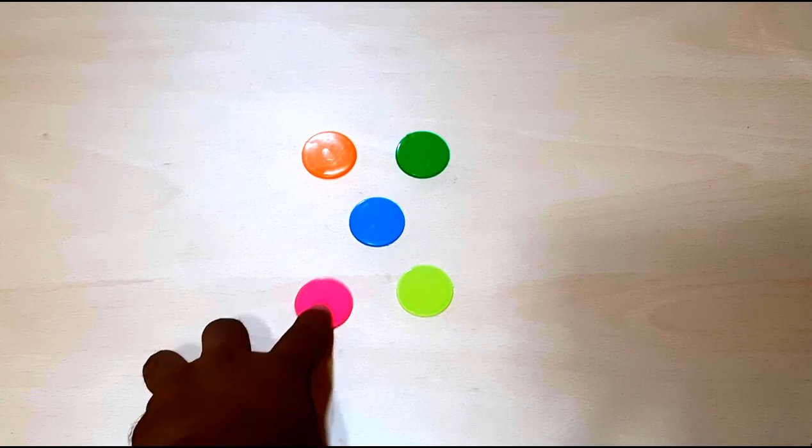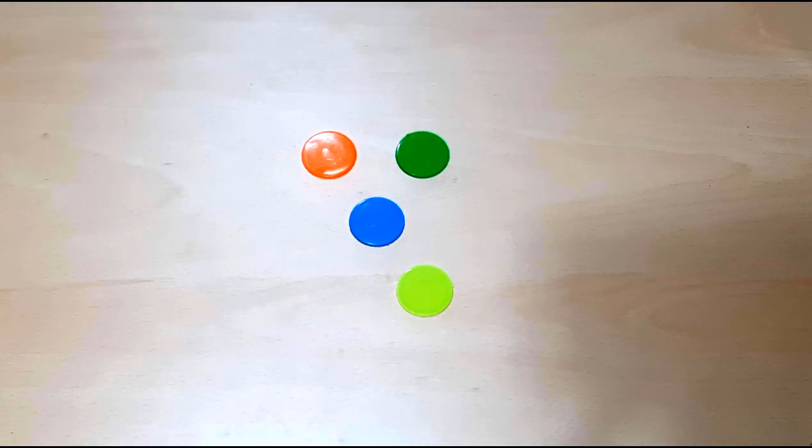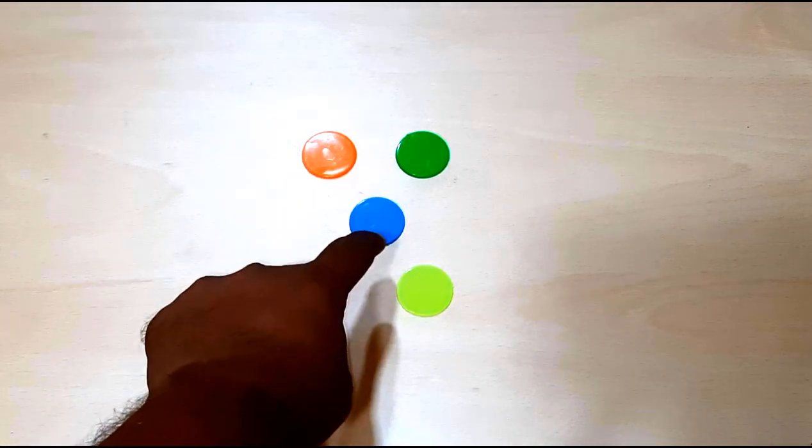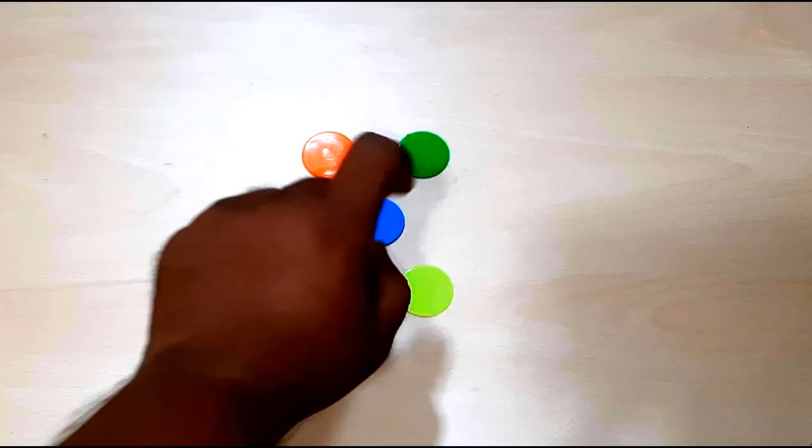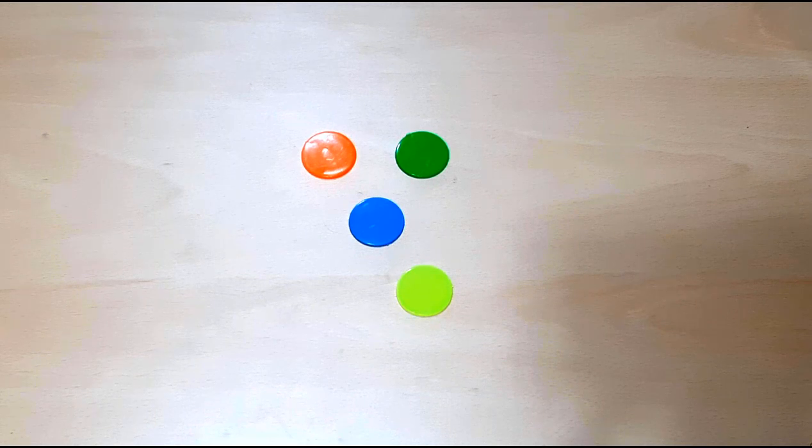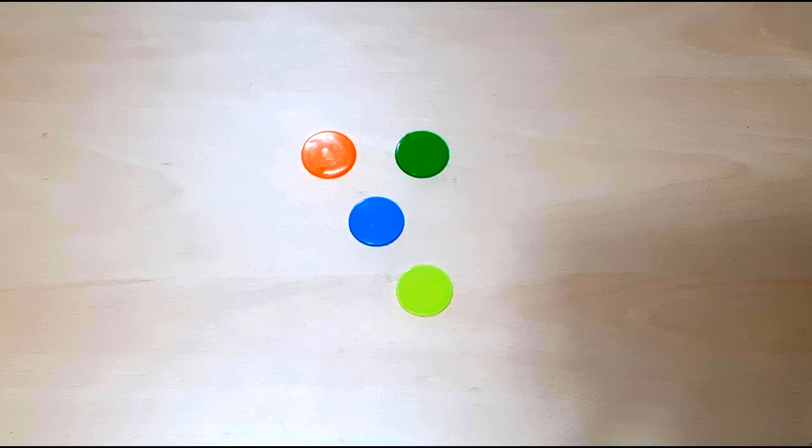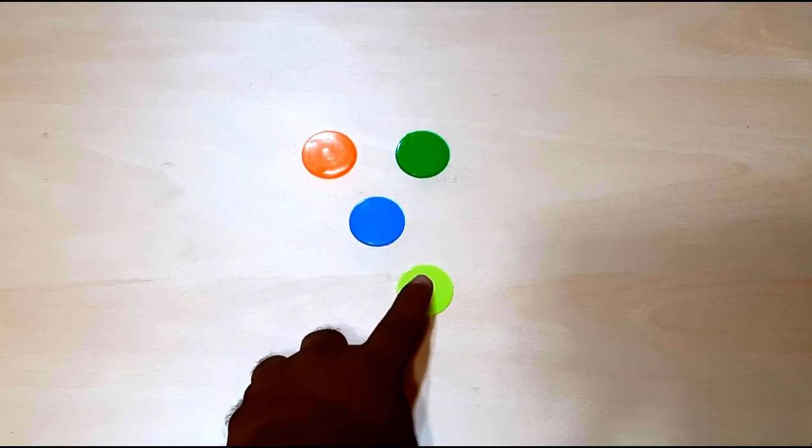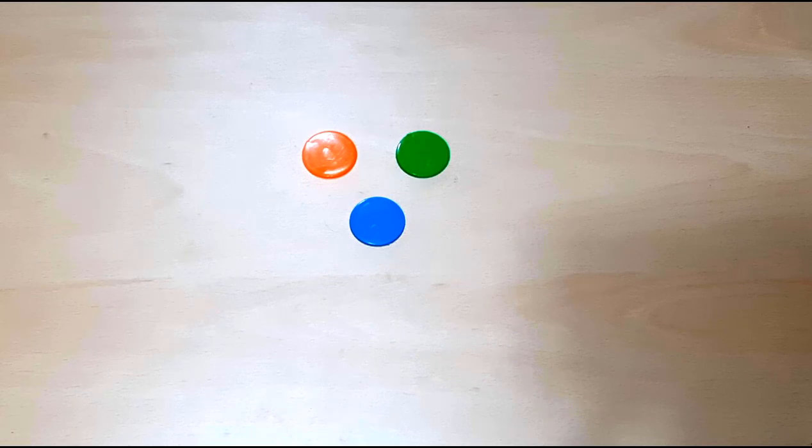Now I am taking one coin and you can see we have one, two, three, four coins left. As we took one coin from five coins, we have four coins.